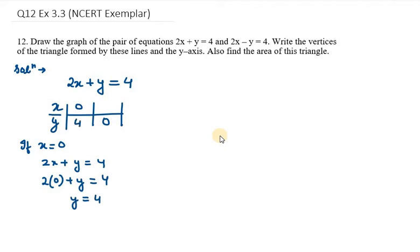Now in the second case, we are given the y value. If my y is 0, then the equation looks like this: 2x plus y equals 4. So it is 2x equals 4. Now we get the value of x as 4 over 2, which is 2.